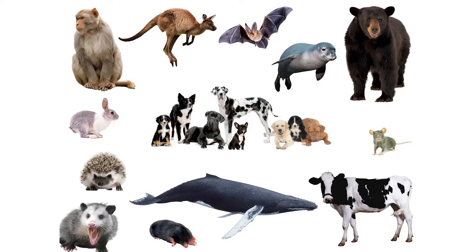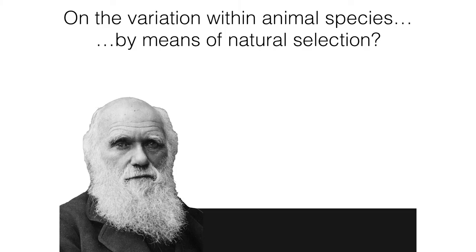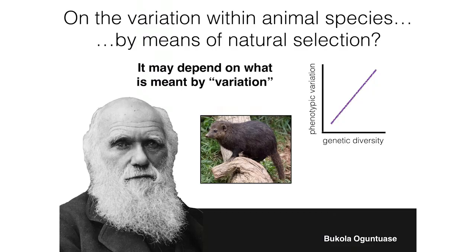To get back to where we started: we have all this variation across species, which we try to understand in the context of evolution and natural selection. One way to study it is by looking at variation within species — for example, in dogs or in the various breeds of pigeon. Remember the question at the beginning of the talk: is the variation within animal species caused by natural selection or is something else going on? It's important to note that it may depend on what we mean by variation — we illustrated some relationship between genetic variation and phenotypic variation, but we need more work to fully understand this.